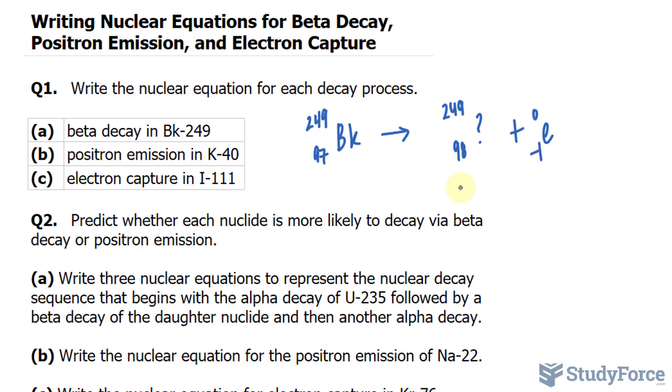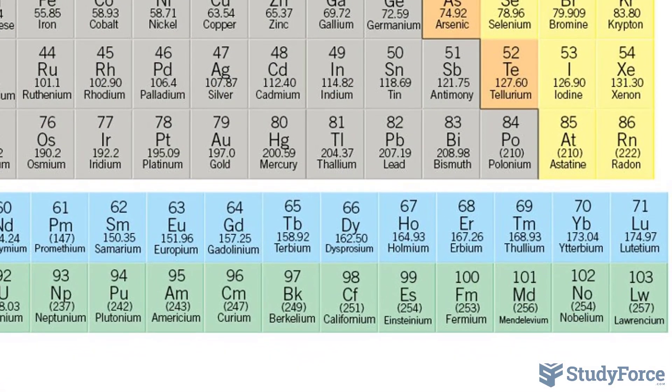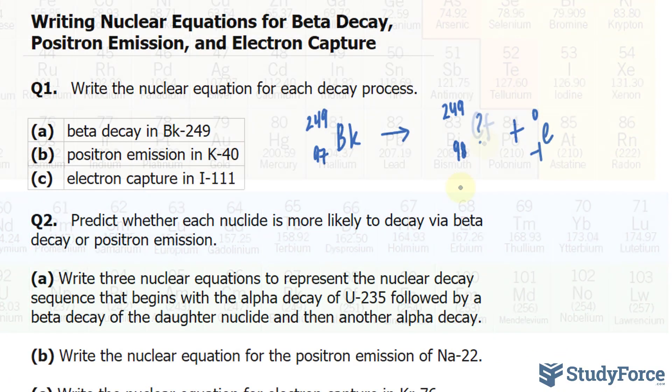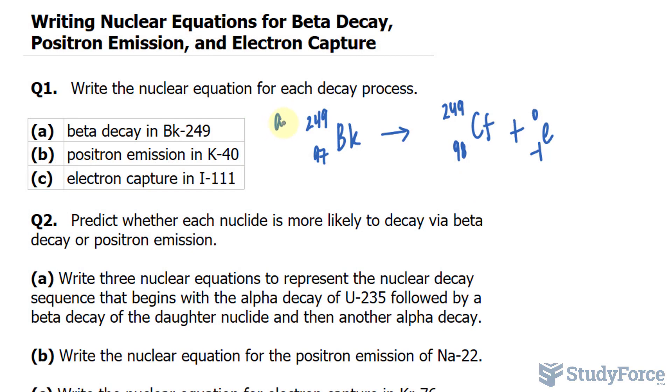To find this, all we have to do is look for the 98th element on the periodic table, and it actually should be Californium, which has the atomic symbol of CF. That's the answer to question A. Let's move on to B.